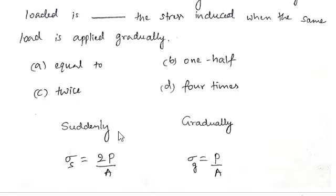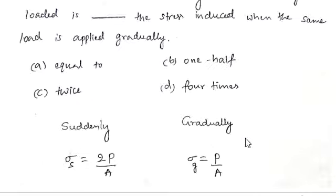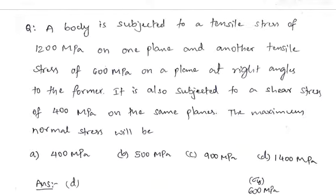When a load is applied suddenly, the stress is given by 2P/A, and when the same load is applied gradually it is P/A. So when a load is applied suddenly, the stress is twice the stress when the load is applied gradually. Option C is the right answer.